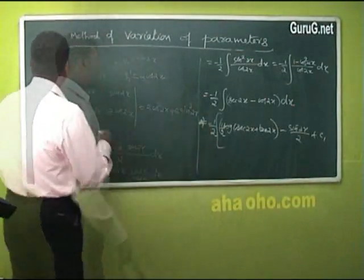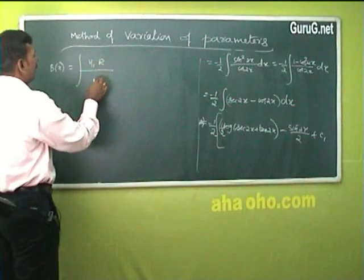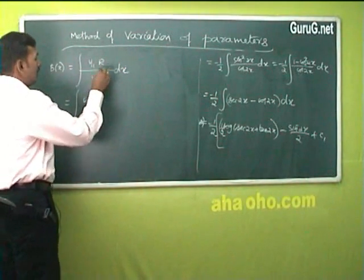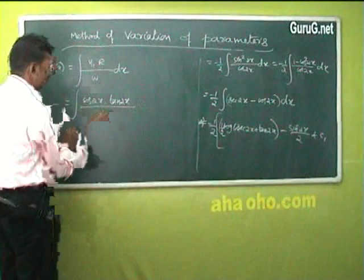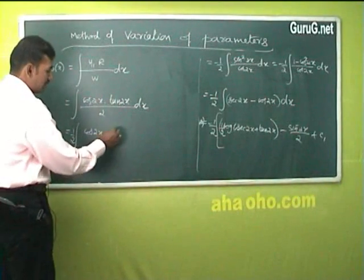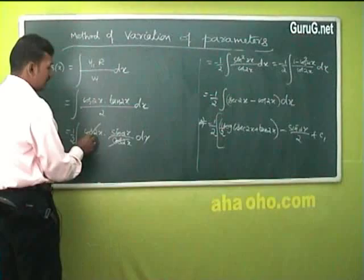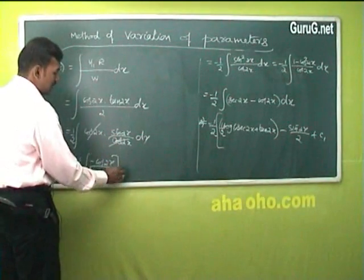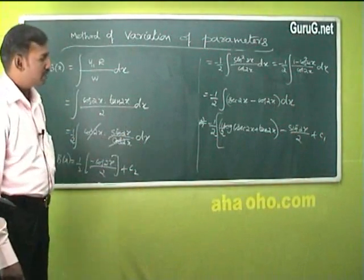Now b(x) = ∫[y₁·R / W] dx = ∫[cos(2x)·tan(2x) / 2] dx. Since cos(2x)·tan(2x) = cos(2x)·sin(2x)/cos(2x) = sin(2x), this simplifies to (1/2)∫sin(2x) dx = −cos(2x)/4 + c₂. This is b(x).